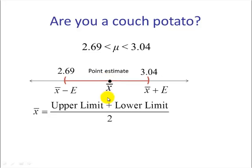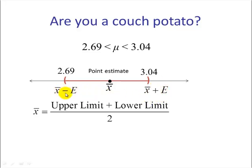If we think about it, if we take our upper limit, which is X-bar plus E, and then we add our lower limit, which is X-bar minus E, and add these two together, we would have X-bar plus X-bar, and then a positive E and a negative E — they would cancel. So we are left with 2·X-bar. Divide by 2, we get X-bar.